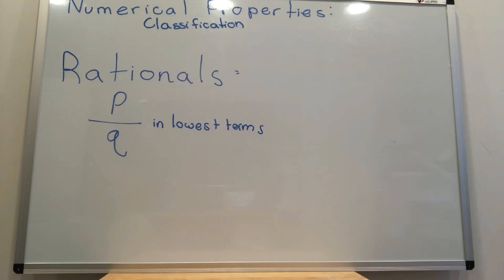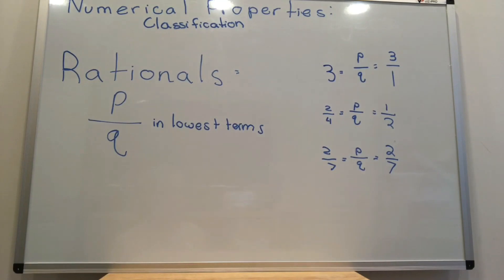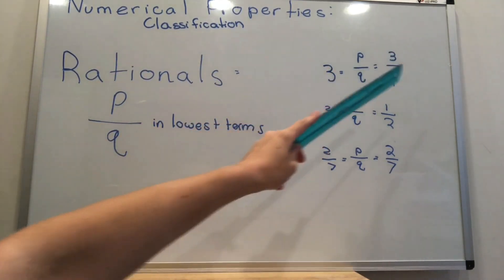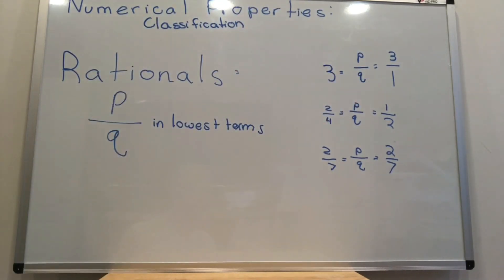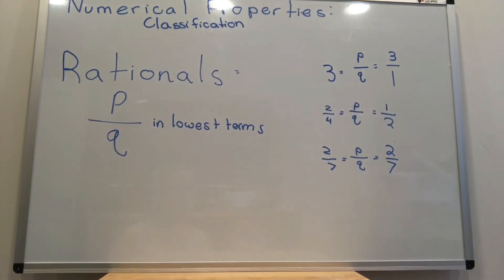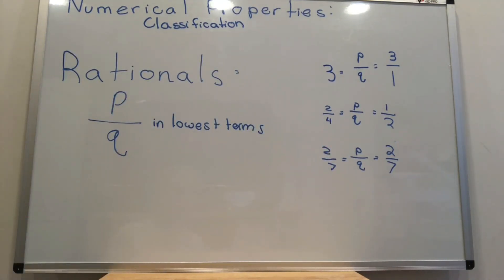The next level up is rational numbers. Rational numbers include the integers. Rational numbers are any numbers that can be expressed as p over q, where the fraction is in lowest terms, meaning p and q have no factors in common. The numerator and the denominator must both be integers, and only one of them can be negative. For example, 3 is 3 over 1, which is p over q — 3 and 1 are both integers, meaning 3 is a rational number. 2 over 4 equals 1 over 2; since 1 over 2 is in lowest terms, 2 over 4 is a rational number. Lastly, 2 over 7 is already in rational number form — both are integers and they are not both negative, so 2 over 7 is a rational number.